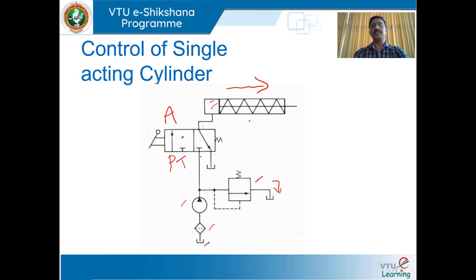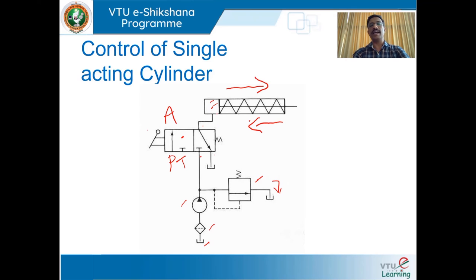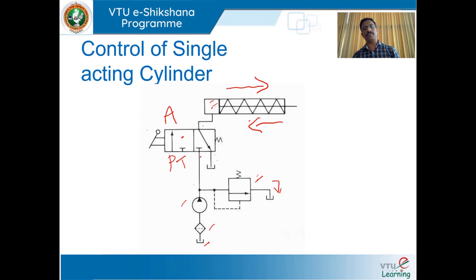When you release the lever, the valve will shift to the right envelope configuration — that is the spring offset mode. The cylinder will start retracting with help of the spring, and the oil present in the blank end is drained to the tank. During that operation, P is blocked and full pump flow goes to the tank via the pressure relief valve. This is how a three-way two-position valve is used to control a single acting cylinder.